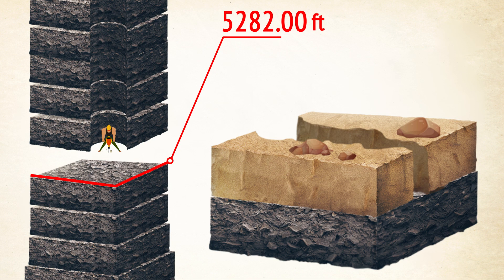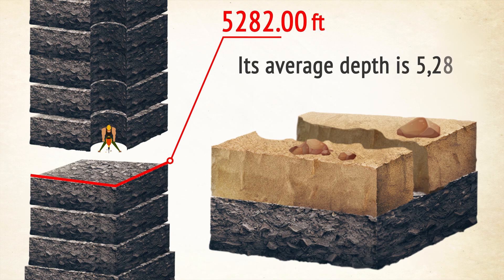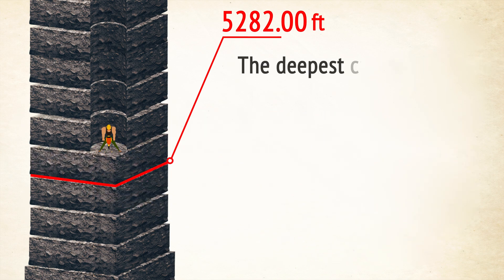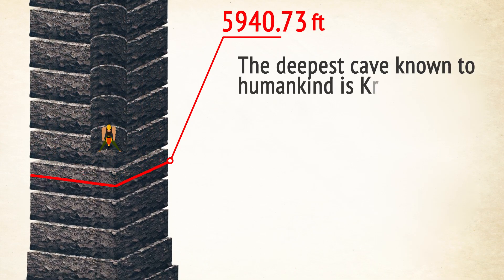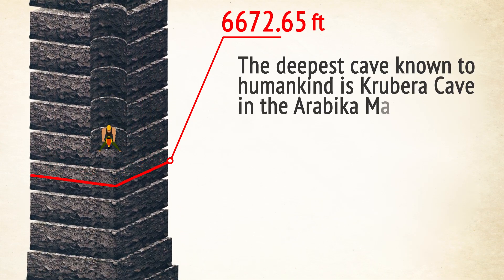About 5,920 feet down and we arrive at the deepest part of the 227-mile-long Grand Canyon. Its average depth is 5,282 feet. The deepest cave known to humankind is Krubera Cave in the Arabika Massif in Georgia. The cave goes down 7,185 feet.